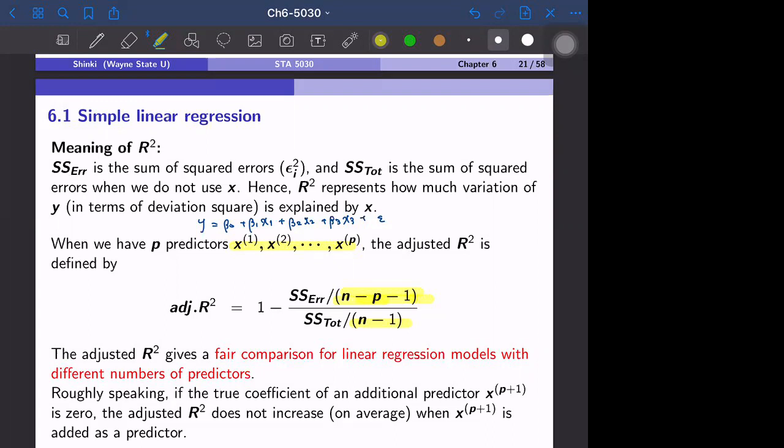For example, if we have 100 observations, and if we have 99 predictors plus intercept, then we can explain everything unless predictors are linearly dependent.